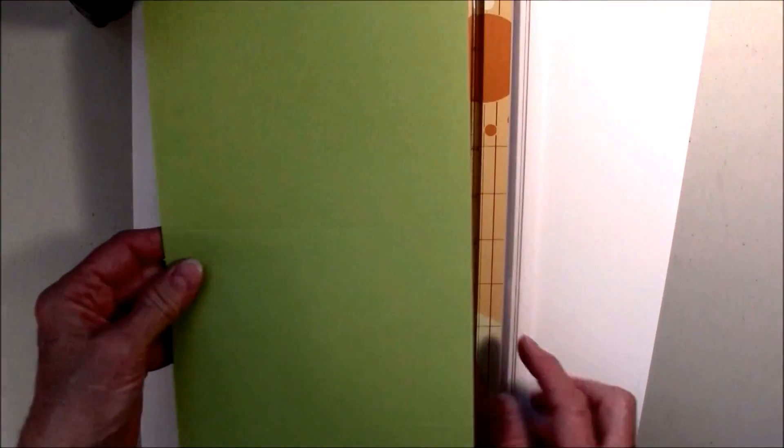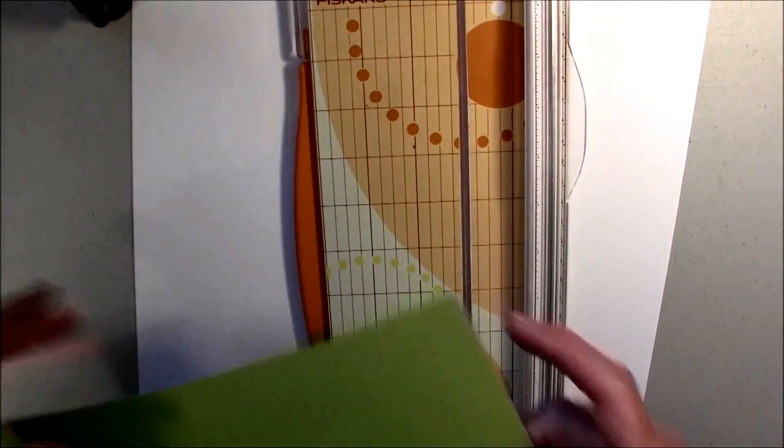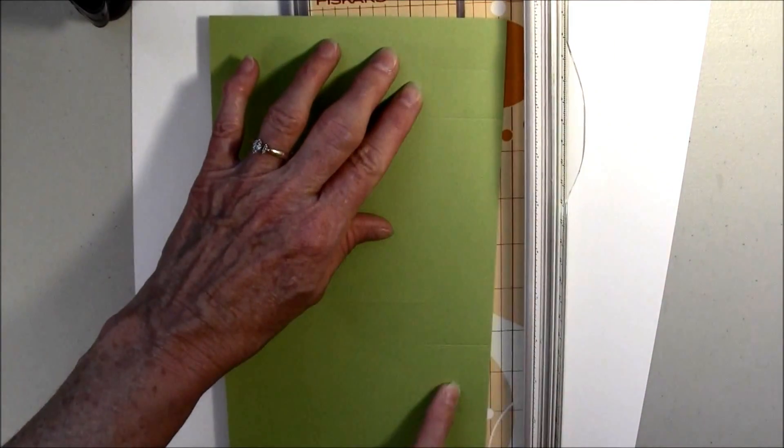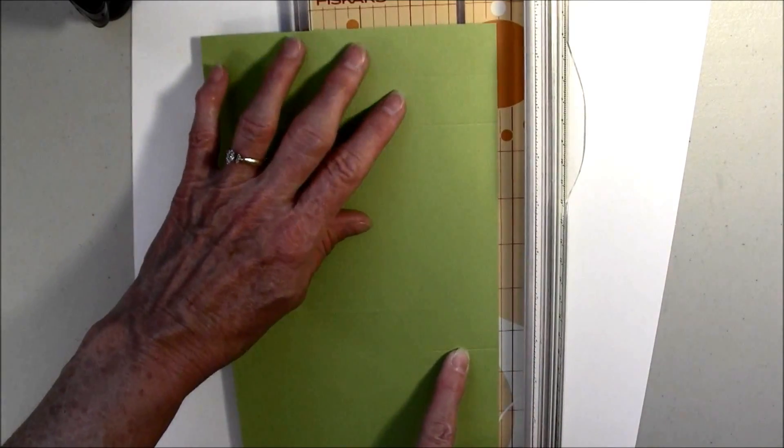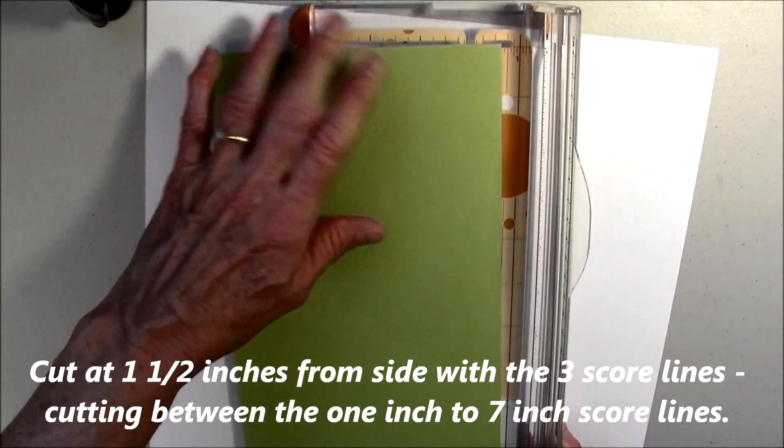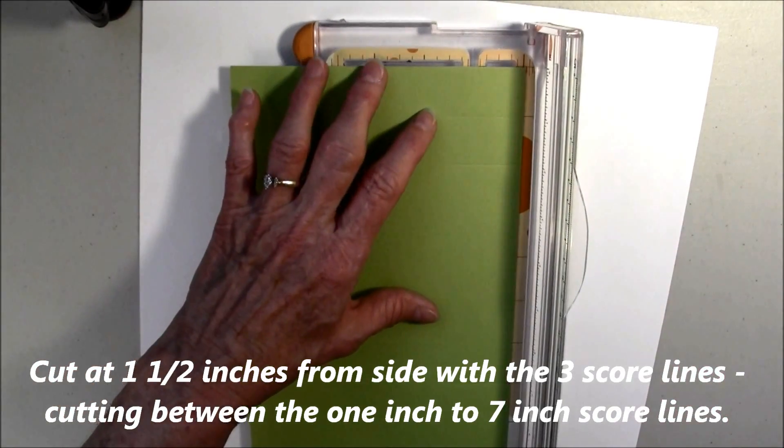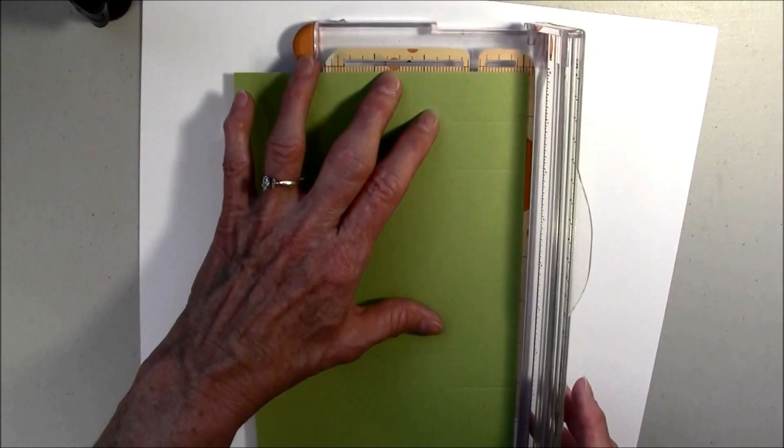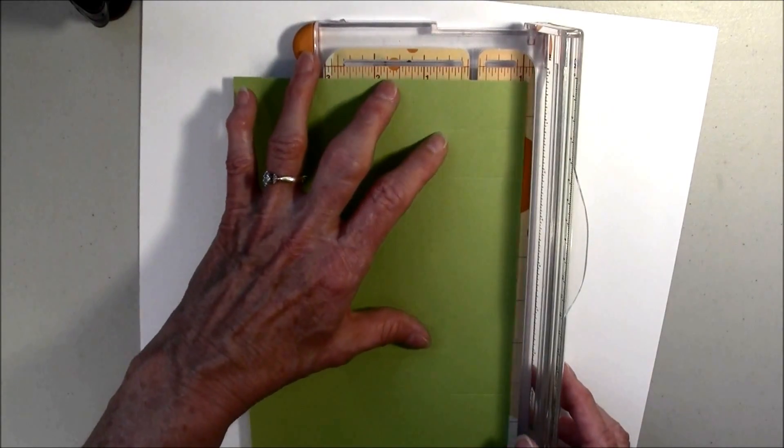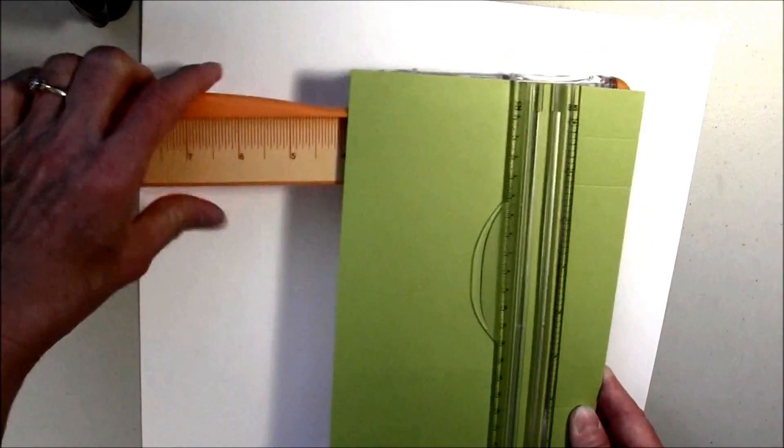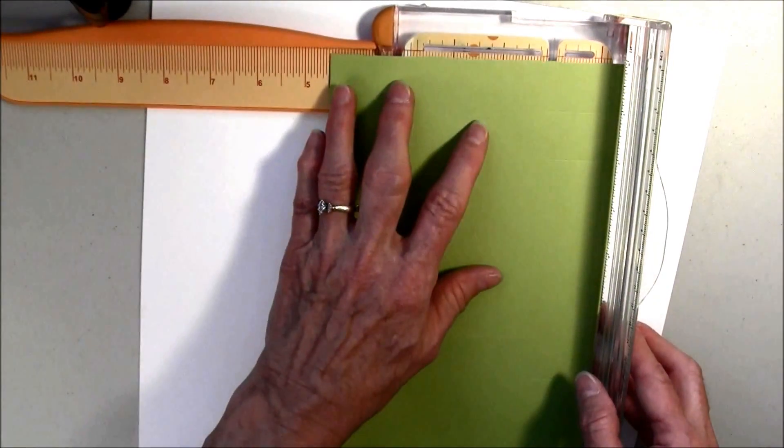And I'm going to cut it between the lines. So, to cut it, you're going to cut it on the side with all your scores. You've got the 1, 2, and the 7. And you're going to cut it on that side. I hope you can see this. So, I'm going to line it up, because you want it to be 1½.